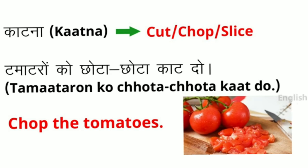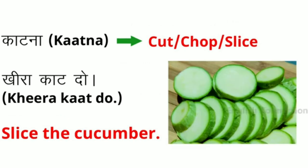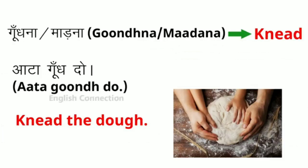The next word is 'cut.' Example: cut the potatoes. If you cut into small pieces, use 'chop.' Example: chop the tomatoes. When you cut into slices, use 'slice.' Example: slice the cucumber.